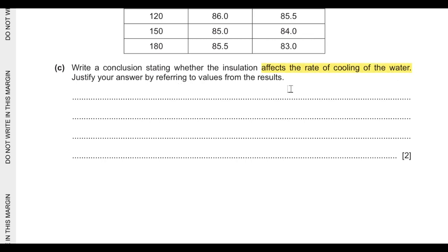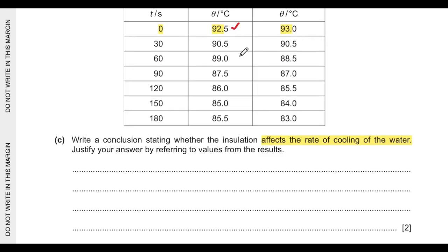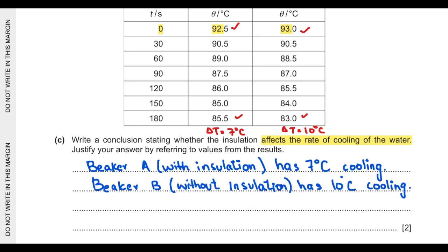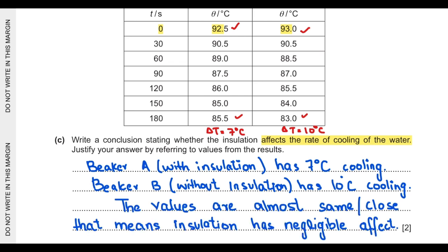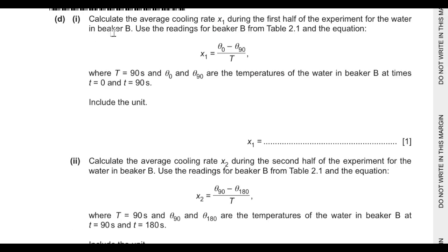Part C asks for a conclusion on whether insulation affects the rate of cooling. From the table, beaker A starts at 92.5°C and after 180 seconds is at 85.5°C — a change of 7 degrees. Beaker B starts at 93°C and after 180 seconds is at 83°C — a change of 10 degrees. The values are close to each other, meaning the insulation has a negligible effect on cooling.